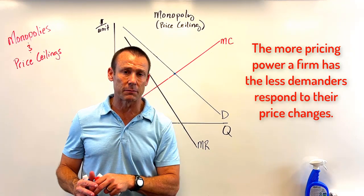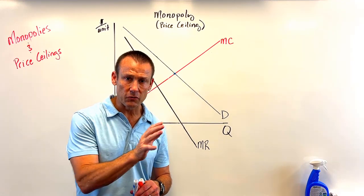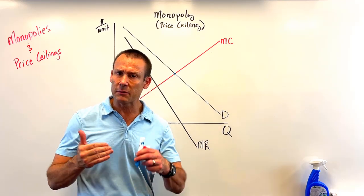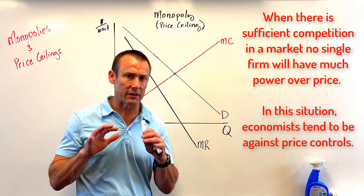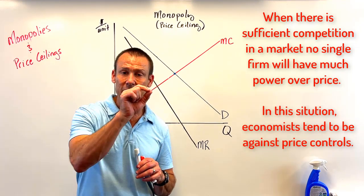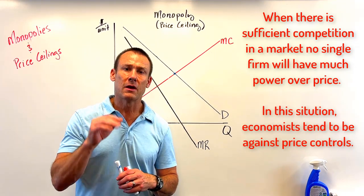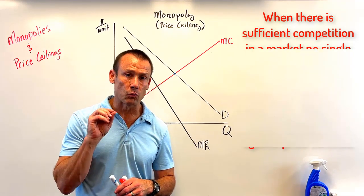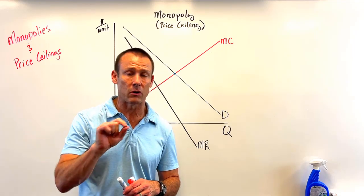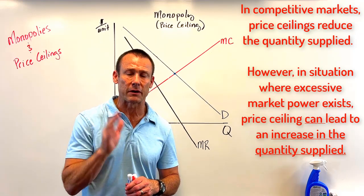One of the most interesting things in this video: when you talk about price ceilings in competitive markets, economists are generally pretty leery of that. One of the big reasons is price ceilings in competitive markets lead to a decrease in the quantity supplied — we get less of the good being provided. However, when you impose a price ceiling in a situation with excessive market power, you actually have a chance of increasing the output.